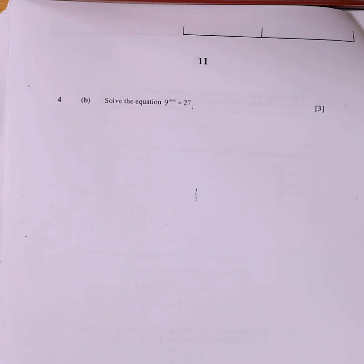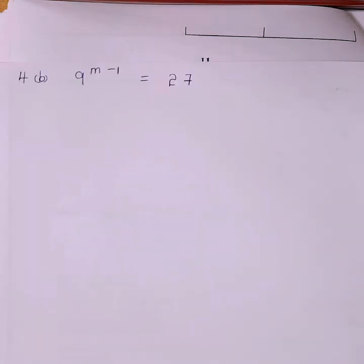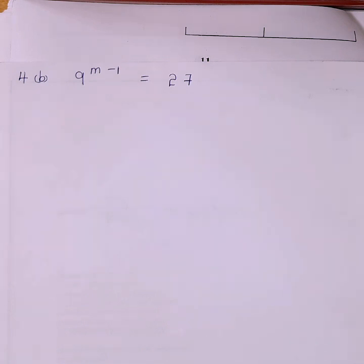It is reading: solve the equation 9 to the power of (m minus 1) equals 27 to the power of m. When we say solving an equation, it means we are supposed to evaluate the value of a given letter. In this case, we are given m, so we are supposed to evaluate the value of m. The first step is making our bases the same.